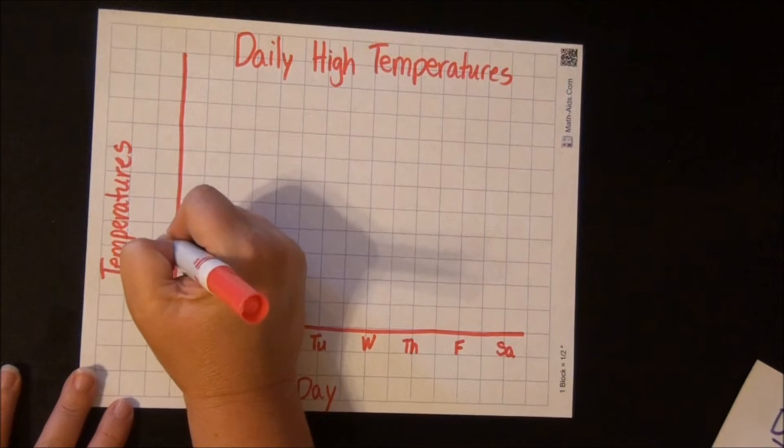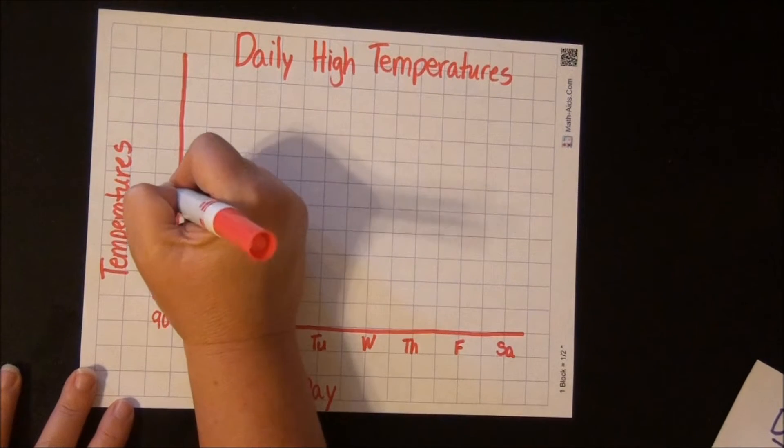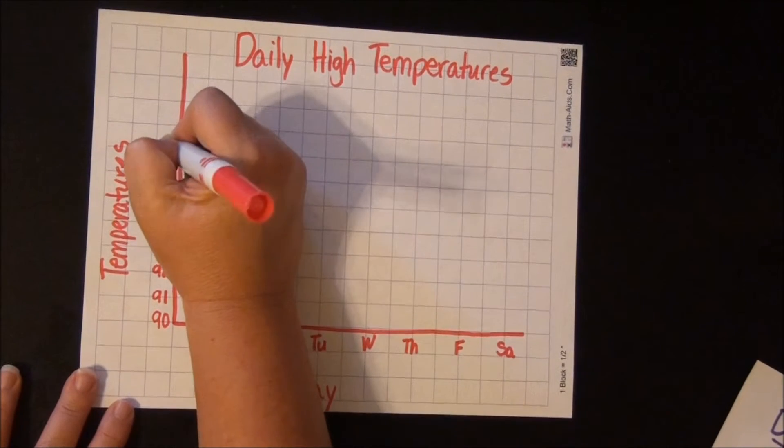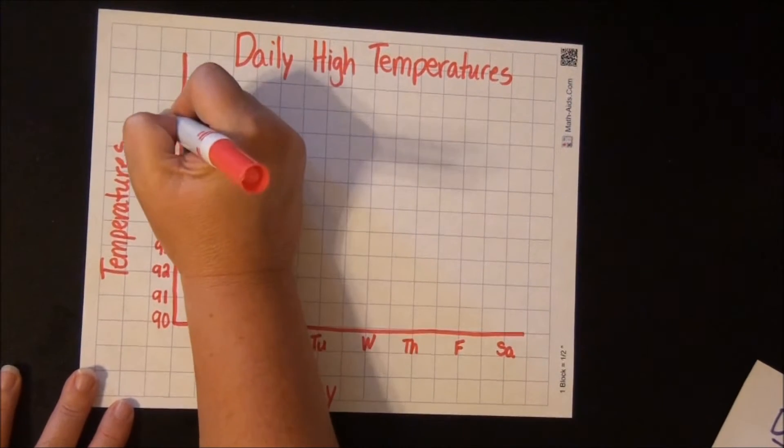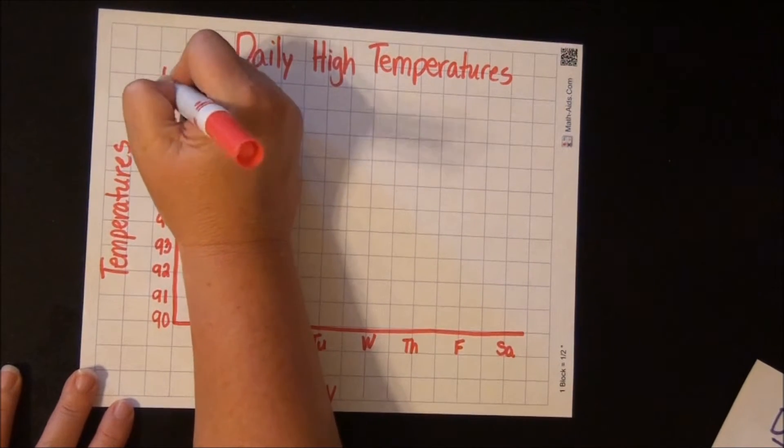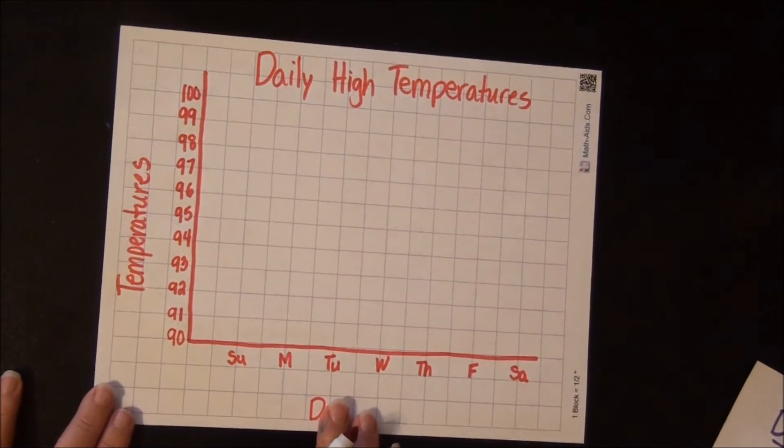92, 93, 94, 95, 96, 97, 98, 99, 100. So now there is our graph. Now we're ready to plot our data.